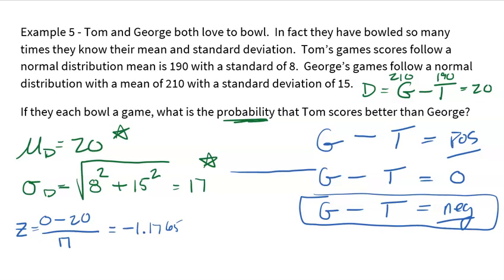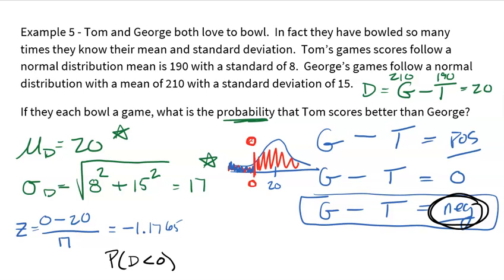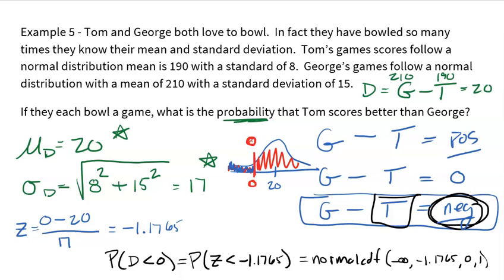Sometimes drawing a little picture might help. Here's my difference. I expect a difference of 20. And wherever zero falls, that's the cutoff, right? Because if the difference is zero, then that means they're tied. George didn't do better. Tom didn't do better. They're tied. So anything above zero is when George did better. Anything below zero is where there's a negative difference. And that's where Tom does better. So I'm trying to find the probability that the difference is less than zero because less than zero is a negative number, which means Tom did better, which is equivalent to find the probability that a Z score is less than negative 1.1765.